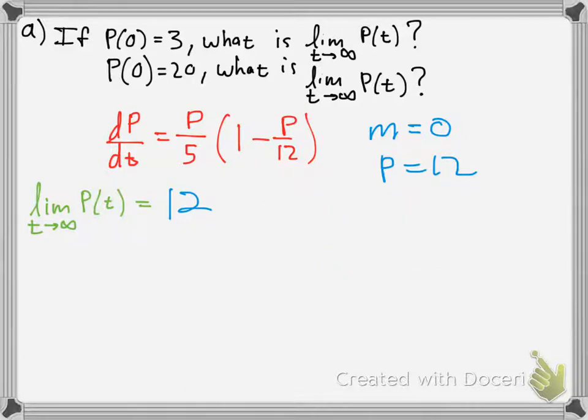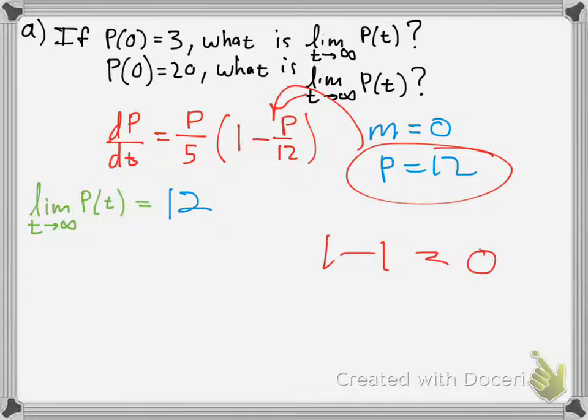So you have to find out when this rate will equal zero. You kind of just look at this problem and say, okay, how can I make dP/dt equals zero? Well, if you put P equals 12 in here, you get 1 minus 1 equals 0. Zero times 12 over 5 would be zero.